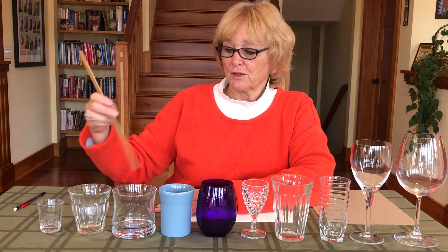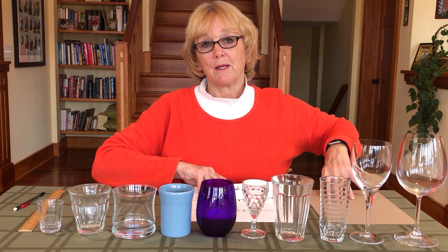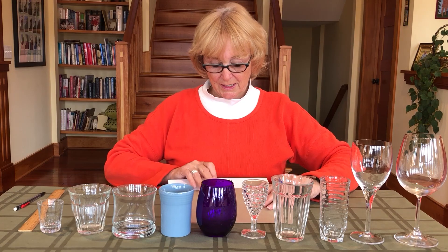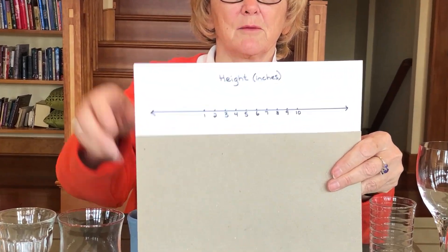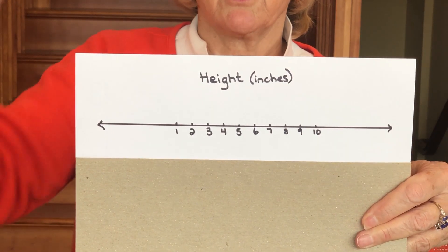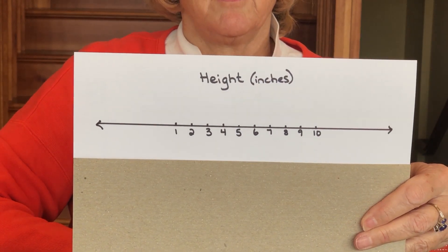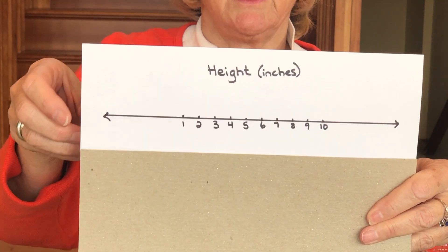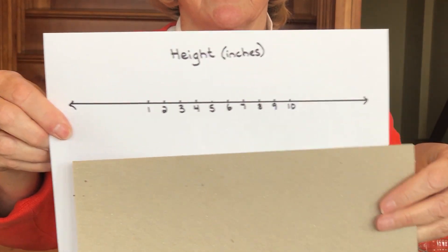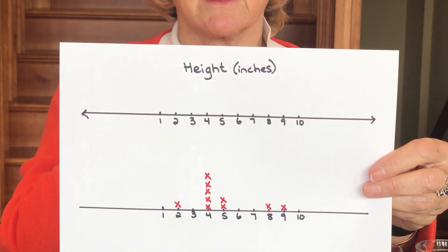I used my ruler to measure the height of each one of these glasses to the nearest inch and I recorded them. I now want to make what's referred to as a line plot. A line plot is simply a number line — notice its features: it's scaled with equal increments from 1 through 10 with equal spacing. Because I've already measured, I then made a line plot and this is what it looked like. Each X you see represents the height of one of my glasses.